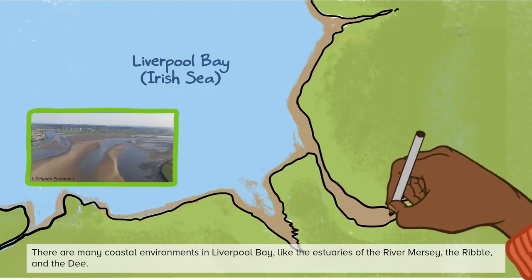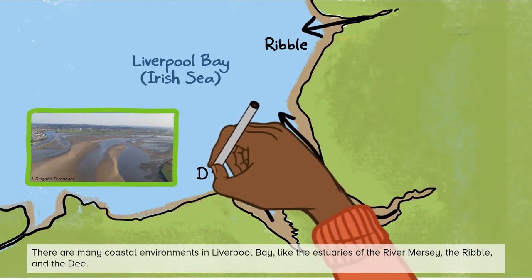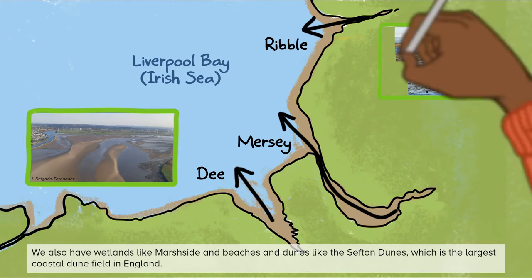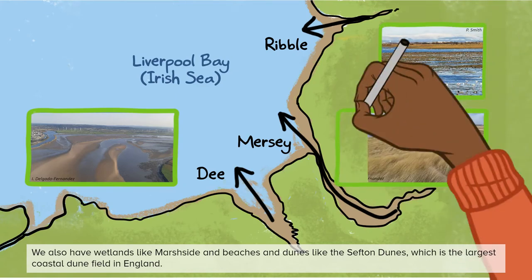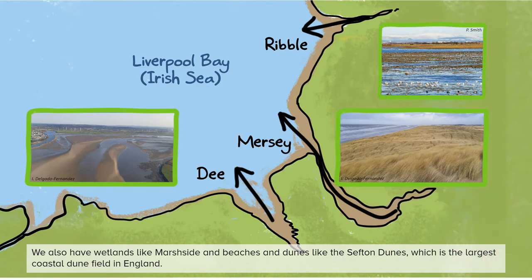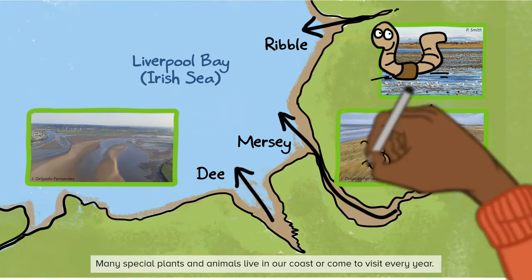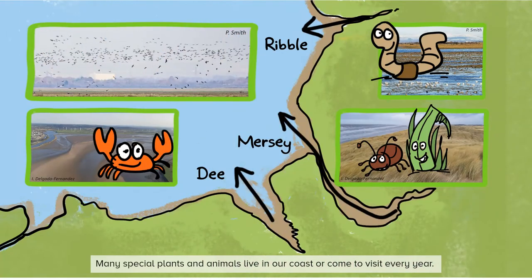There are many coastal environments in Liverpool Bay, like the estuaries of the River Mersey and the Ribble and the Deathe. We also have wetlands like marsh sites and beaches and dunes like the Sefton dunes, which is the largest coastal dune field in England. Many special plants and animals live on our coast or come to visit every year.